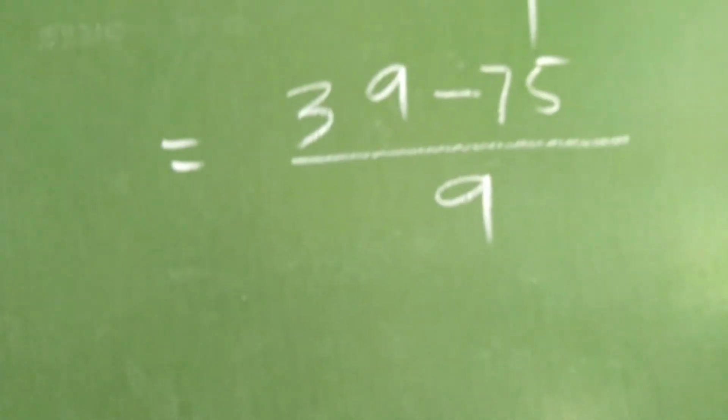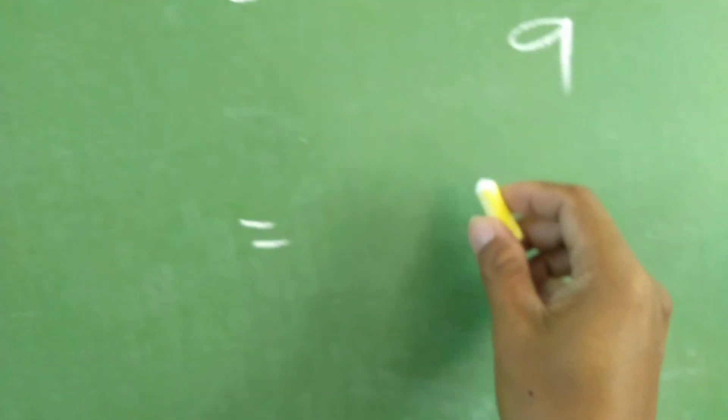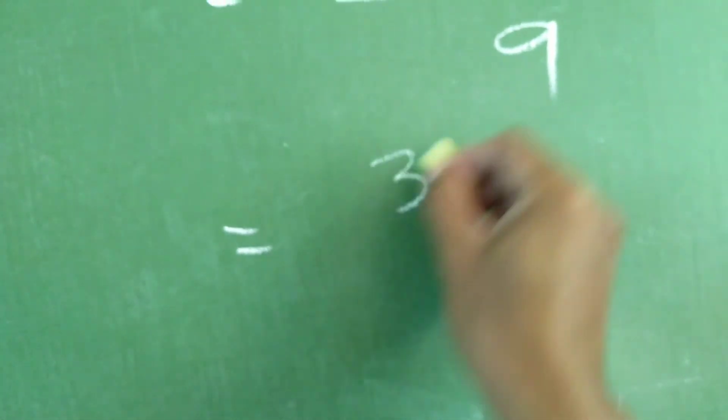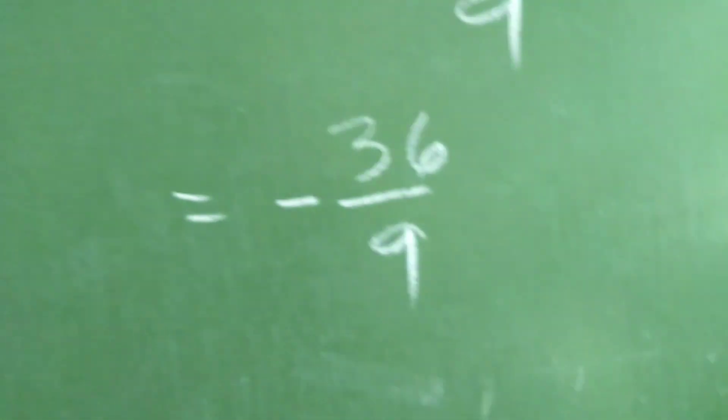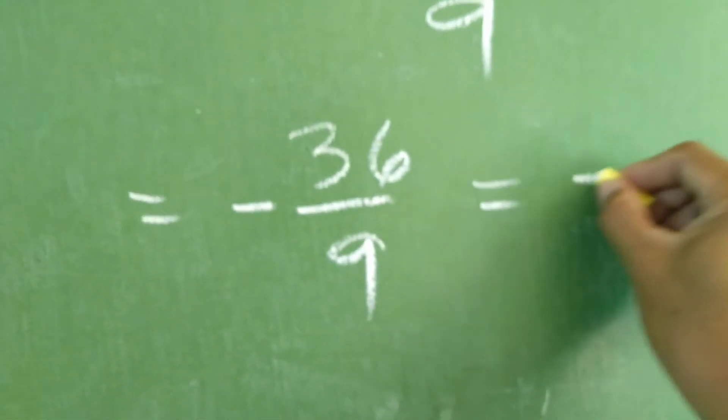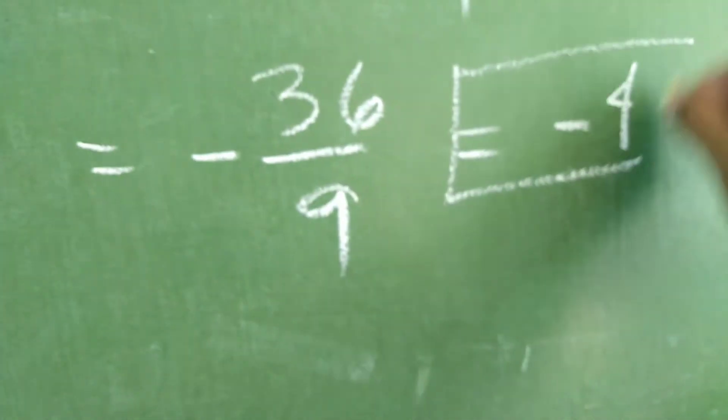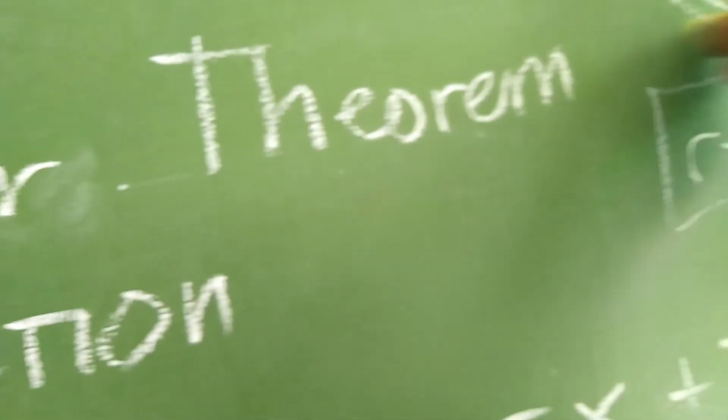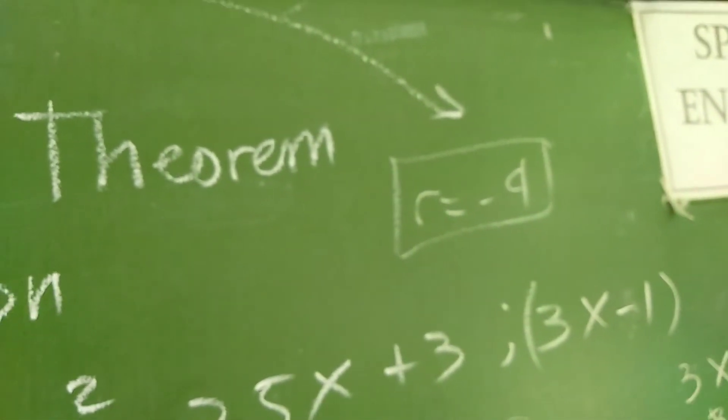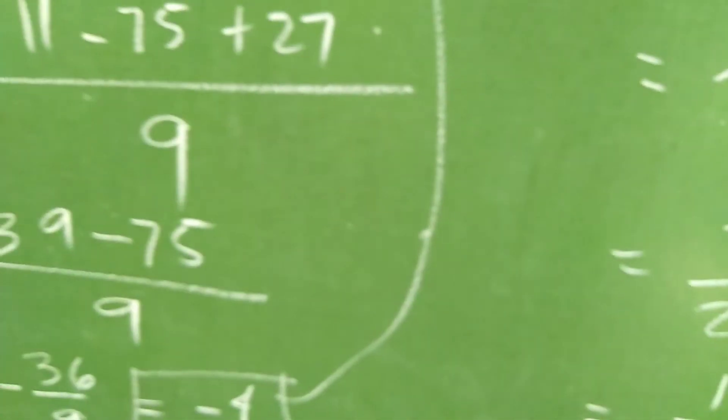So, we have 39 minus 75. So, we have 36 over 9. It's negative. Negative 36 over 9 which is equal to negative 4. So, pareho. It's just the same. Doon sa nakuha natin ng synthetic division na negative 4. Ang sagot natin.